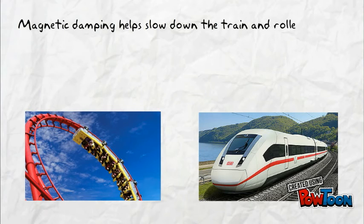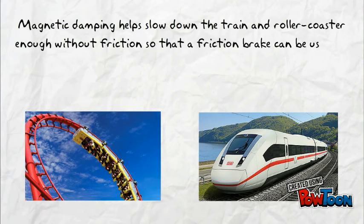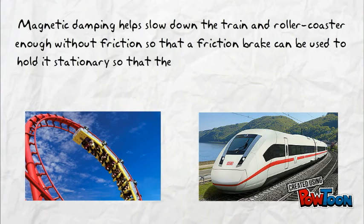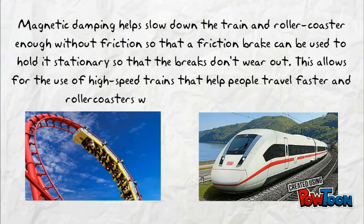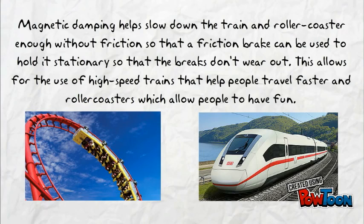Magnetic damping helps slow down the train and roller coaster enough without friction so that a friction brake can be used to hold it stationary so that the brakes don't wear out. This allows for the use of high speed trains that help people travel faster and roller coasters which allow people to have fun.